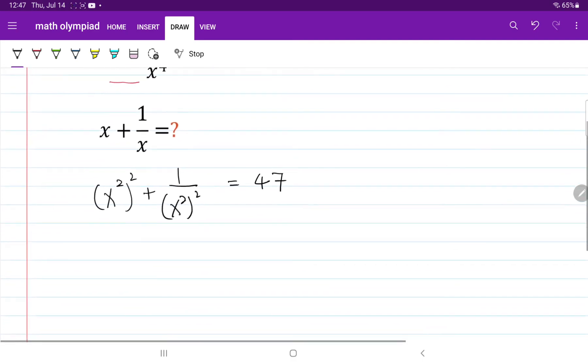For the next step, I'm going to add a plus 2 to both sides. So now we have x squared squared plus 1 over x squared squared plus 2 equals 47 plus 2.